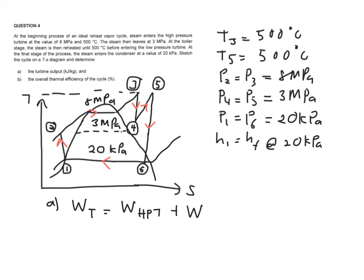Plus the work of your low pressure turbine. In this case, the work of your high pressure turbine is in between stage 3 and stage 4. Plus your low pressure turbine is happening between stage 5 and stage 6.